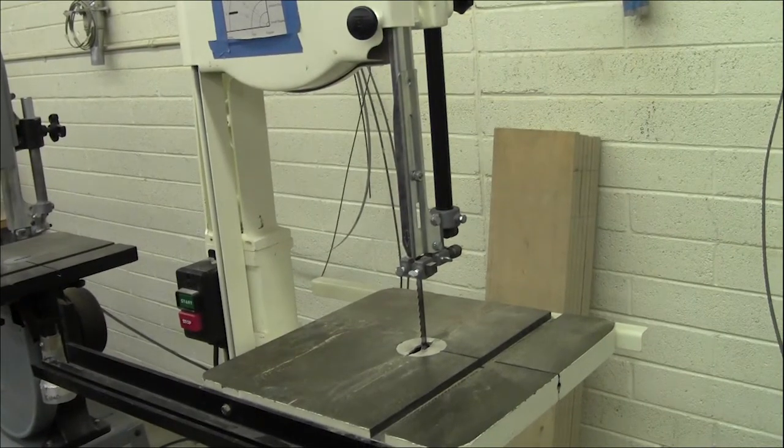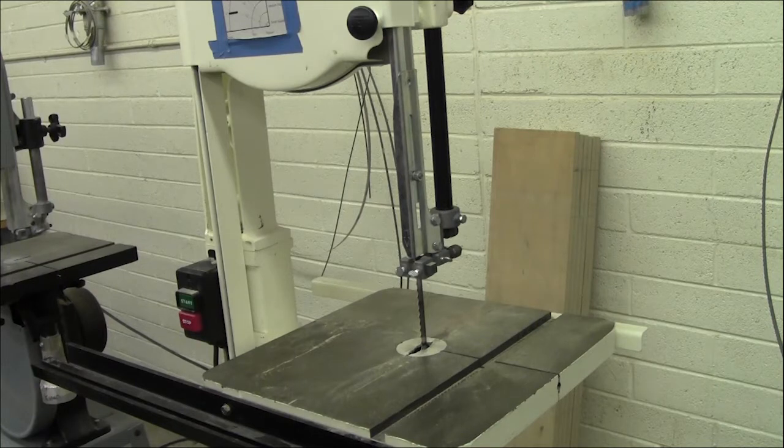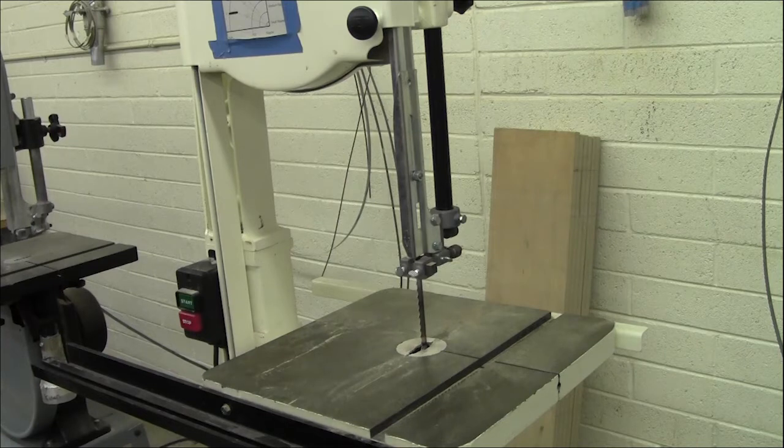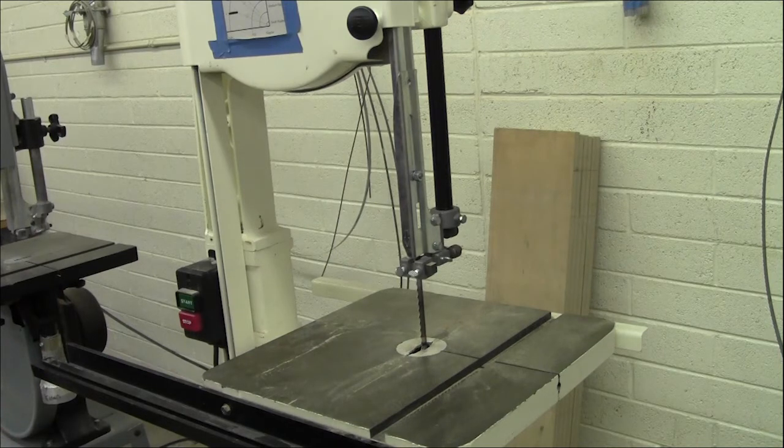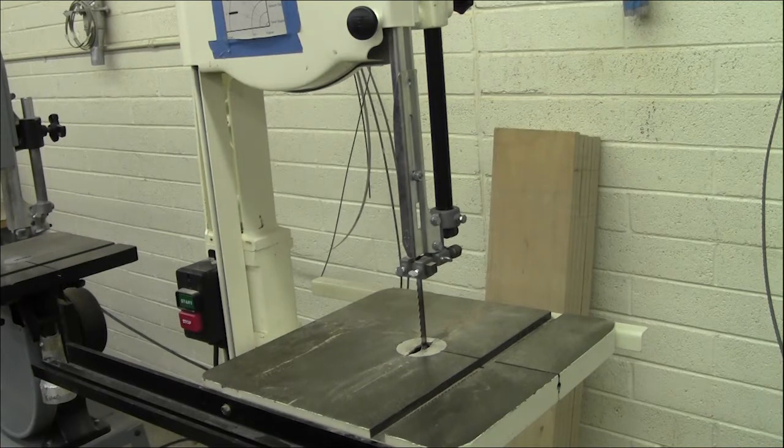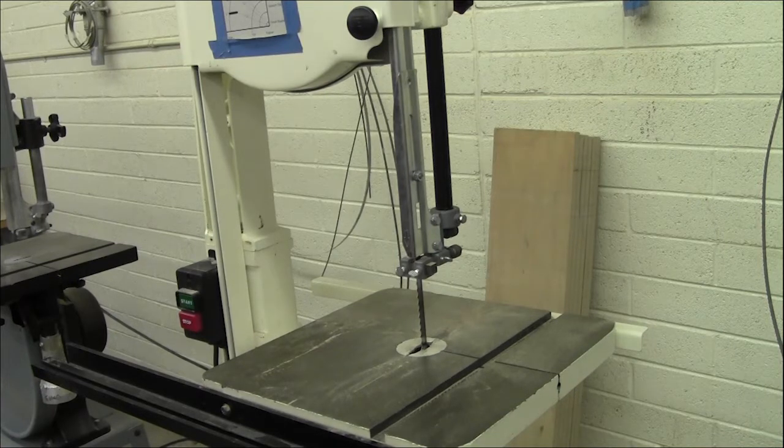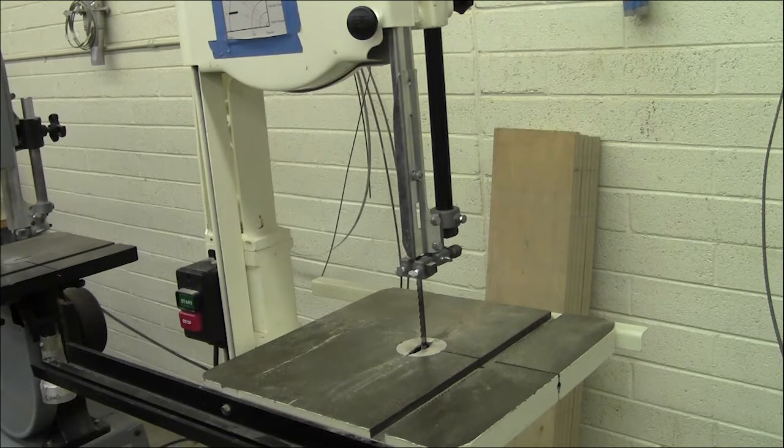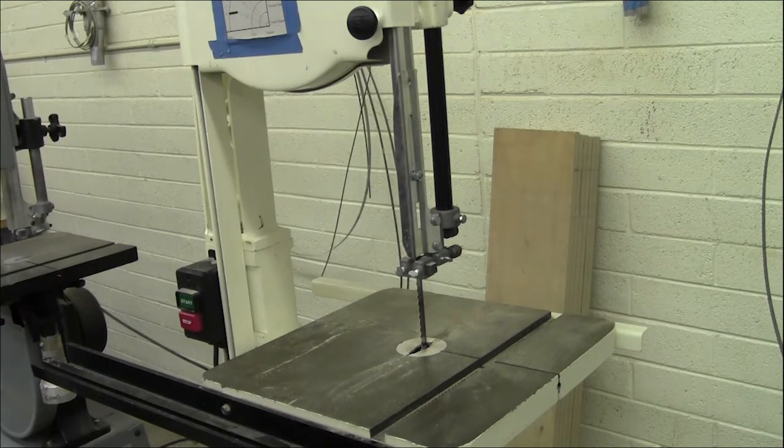Another thing you can do on the bandsaw is what's called re-sawing. Re-sawing is when you're basically changing the thickness. So instead of taking like a 2 inch piece and running it through the planer 15 times to get it to an inch, what you can do is cut it basically in half on the bandsaw. There's still going to be some sanding or some planing you might have to do to straighten it out.